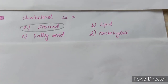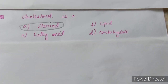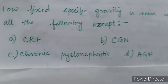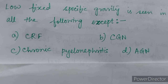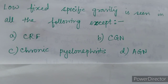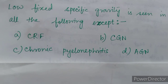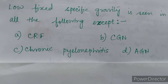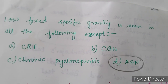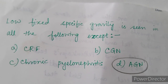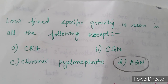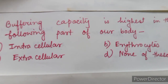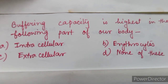Cholesterol is — option A: steroid, option B: lipid, option C: fatty acid, option D: carbohydrate. The correct answer is option A: steroid. Next question: low fixed specific gravity is seen in all the following except — A: CRF, B: CGN, C: chronic glomerulonephritis, D: AGN. The correct answer is option D: AGN — acute glomerulonephritis.